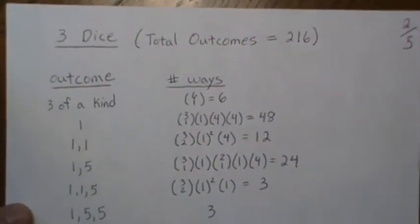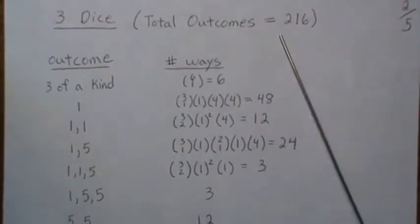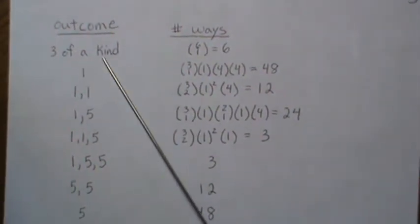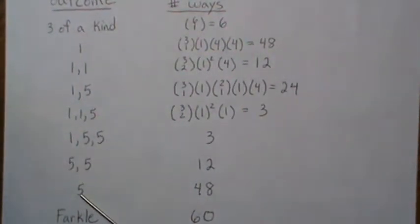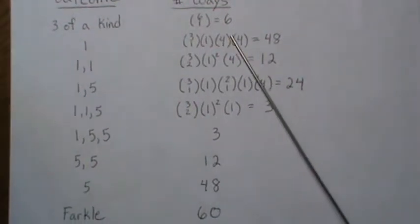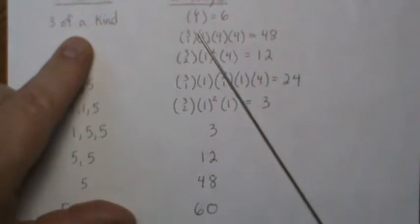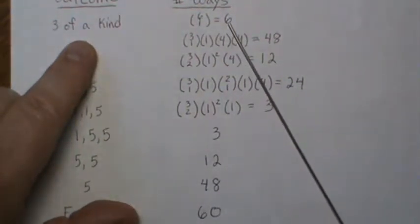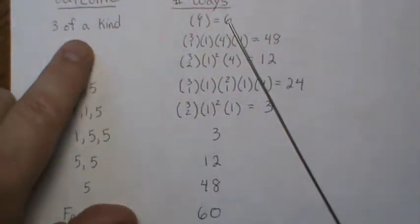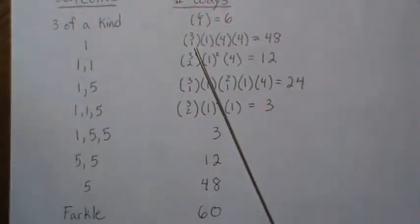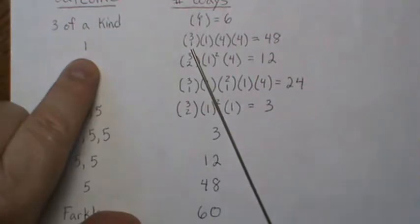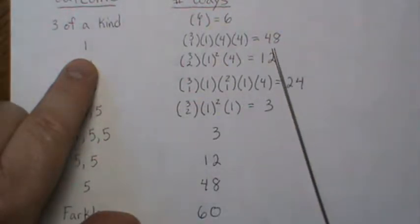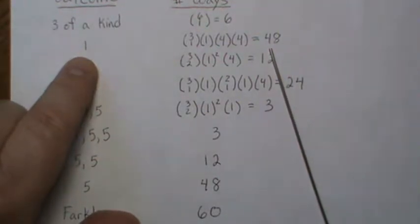For three dice, there are 216 possible outcomes — six cubed. The ways to score are: three of a kind, and all the ways to roll a one or a five, and of course Farkle. To roll three of a kind, you need all three dice the same number. Of the six numbers, pick one — so there are six ways to roll three of a kind. To roll exactly one one: of the three dice, pick one, roll a one, and on the second and third dice there are four ways each, so 48 total ways to roll exactly one one with no five.